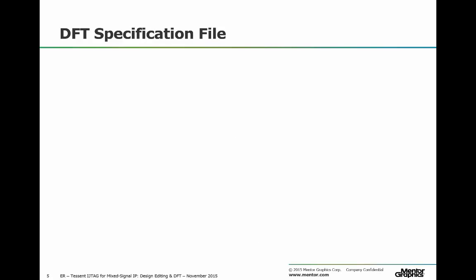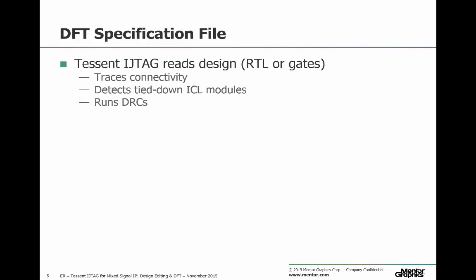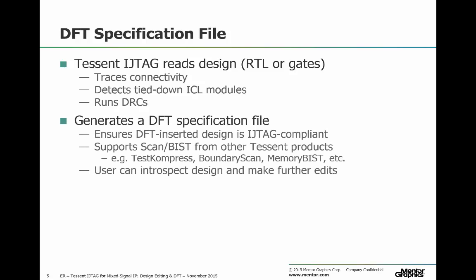Tessent iJTAG supports DFT insertion using a DFT specification file. Your design is read either as RTL or gates and any iJTAG files are also read by the tools. Connectivity is then traced, any IP block or ICL module already tied down in the design is detected, and additional design rule checks are performed to ensure that your design is iJTAG compliant. Based on the analysis, the tool will generate a DFT specification file. It also supports scan and BIST from other Tessent products — if you are already a Test Compress user or using boundary scan or memory BIST from Mentor Graphics, you can still use the very same file.